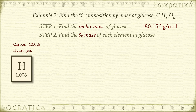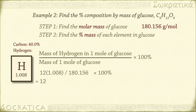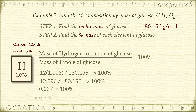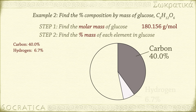Next, the percent mass from hydrogen. The mass of hydrogen in one mole of glucose, divided by the molar mass of glucose, times 100%, is 12 times 1.008 grams, divided by 180.156 grams, times 100%, equals 12.096 grams divided by 180.156 grams, times 100%, equals 0.067 times 100%, equals 6.7%. Glucose is 6.7% hydrogen by mass.